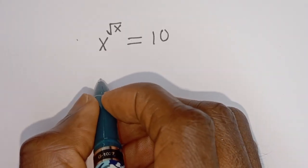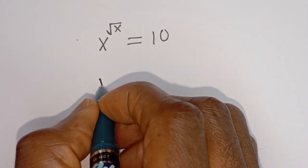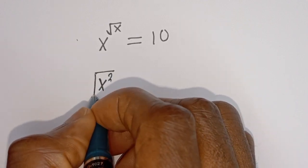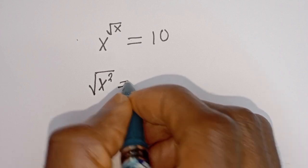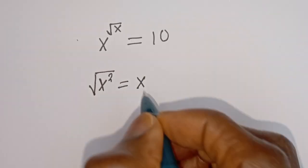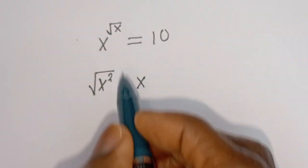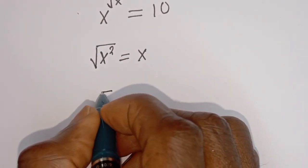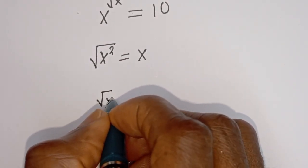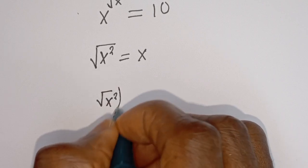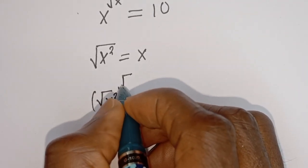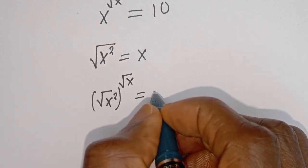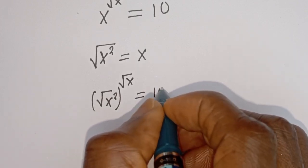Take note that if you have the square root of S squared, this is equal to S. Therefore, all of this can be written as square root of S squared, to the power of square root of S, and this is equal to 10.